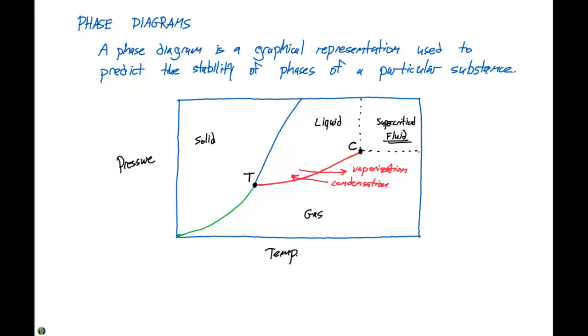If we now look at this green curve right here, this represents the equilibrium between our solid and our gas. If we go from a solid to a gas, this is sublimation. And if we go from gas to solid, this is deposition. This is referred to as the sublimation curve, and it separates the solid phase and the gas phase.